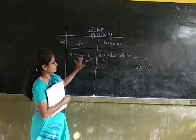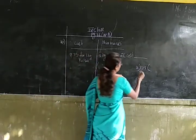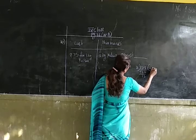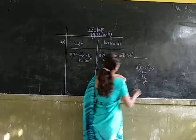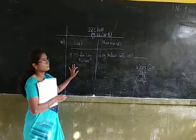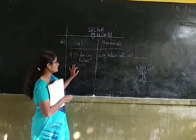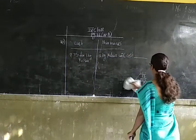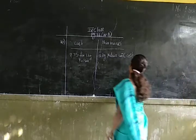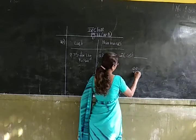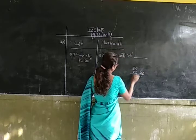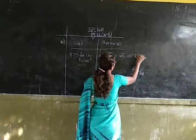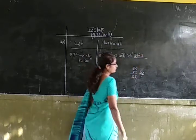75 divided by 3: 3 goes into 7 two times, 3 goes into 15 five times. So the cost of 1 kg of pulse last month is Rs. 25. The cost of 5 kg of pulses this month: we multiply 25 by 5. 5 fives are 25. 5 twos are 10, plus 2 is 12. So she has to pay Rs. 125 for 5 kg of pulses.